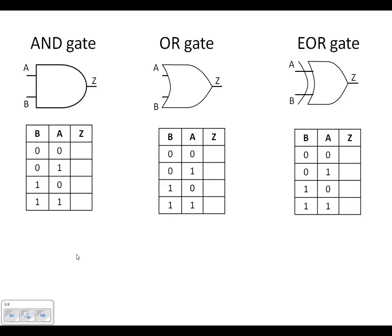Let's move to these gates. With the AND gate, it's when both inputs are high that the output is going to be high, as shown here. For all other combinations the output will be 0. So that's the AND gate — both inputs high, the output is high.